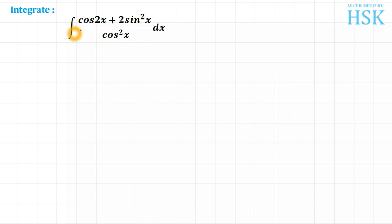In this question we have to integrate cos 2x plus 2 sine squared x upon cos squared x. We have been given an elaborate trigonometric expression.